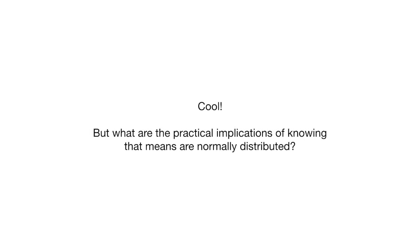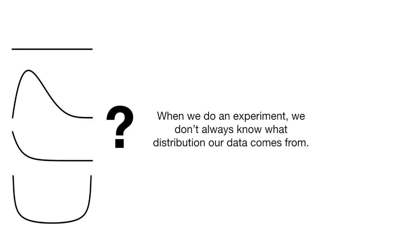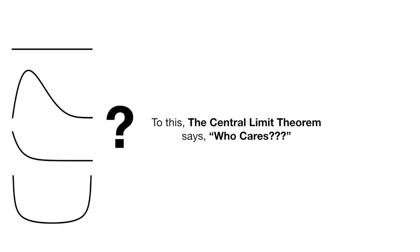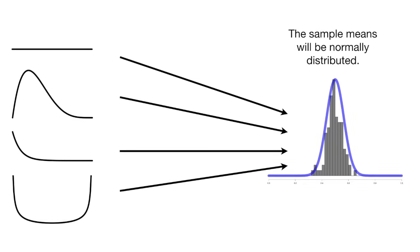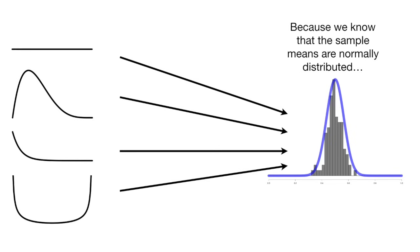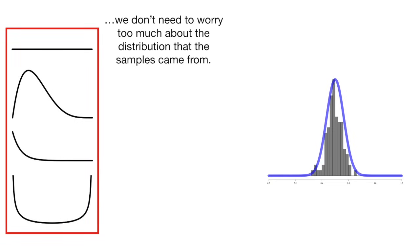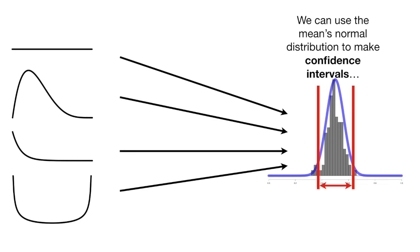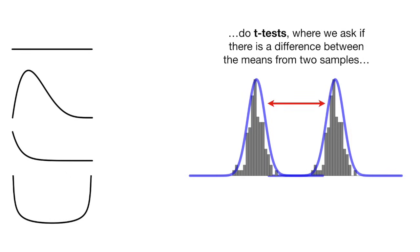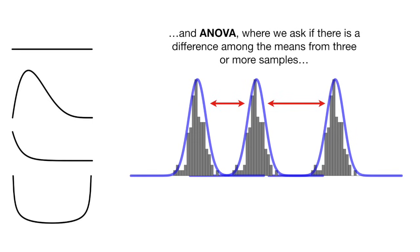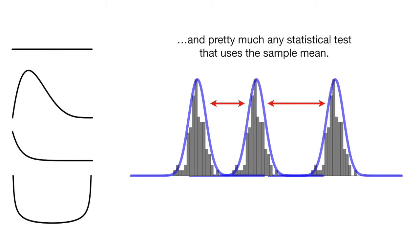Cool! But what are the practical implications of knowing that the means are normally distributed? When we do an experiment, we don't always know what distribution our data comes from. To this, the central limit theorem says, who cares? The sample means will be normally distributed. Because we know that the sample means are normally distributed, we don't need to worry too much about the distribution that the samples came from. We can use the means normal distribution to make confidence intervals, do t-tests, where we ask if there's a difference between the means from two samples, and ANOVA, where we ask if there is a difference among the means from three or more samples, and pretty much any statistical test that uses the sample mean. Triple bam!